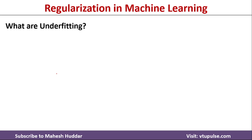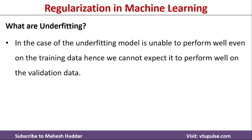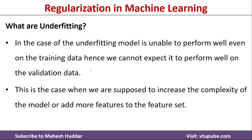Underfitting is when the model is unable to perform well even on the training data. If the model doesn't work well on the training data, we cannot expect it to perform well on the validation or testing data either. In this case, we need to increase the complexity of the model or add more features to the feature set so that the model performs well on the training data.